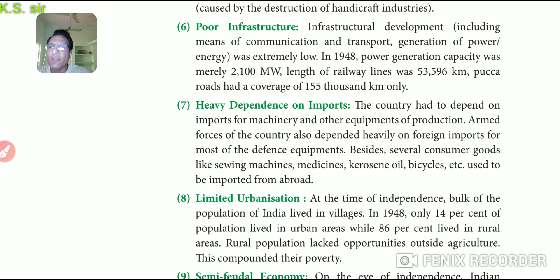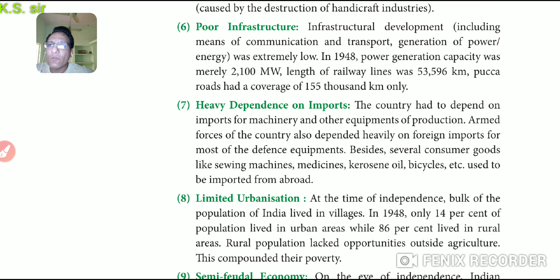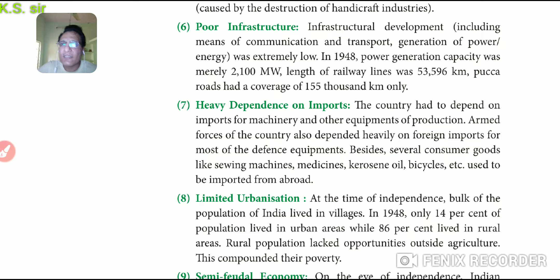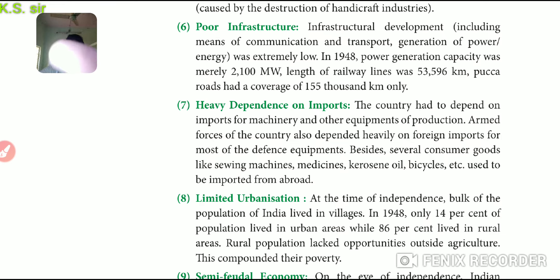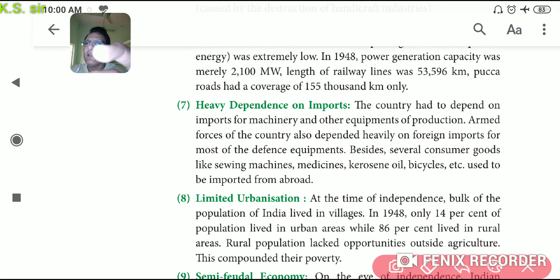The seventh feature was heavy dependence on imports. The country had to depend completely on imports for machinery and other equipment of production. The armed forces were also heavily dependent on foreign imports — ammunition and defense equipment were directly imported from British industry. Most defense equipment, as well as several consumer goods like sewing machines, medicine, kerosene, and oil were imported from abroad.